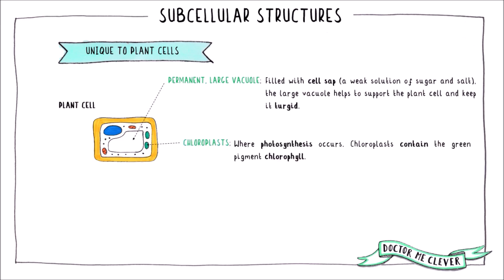Chloroplasts are the site of photosynthesis. They contain the green pigment chlorophyll, which absorbs the light energy needed to turn carbon dioxide and water into glucose and oxygen during photosynthesis.